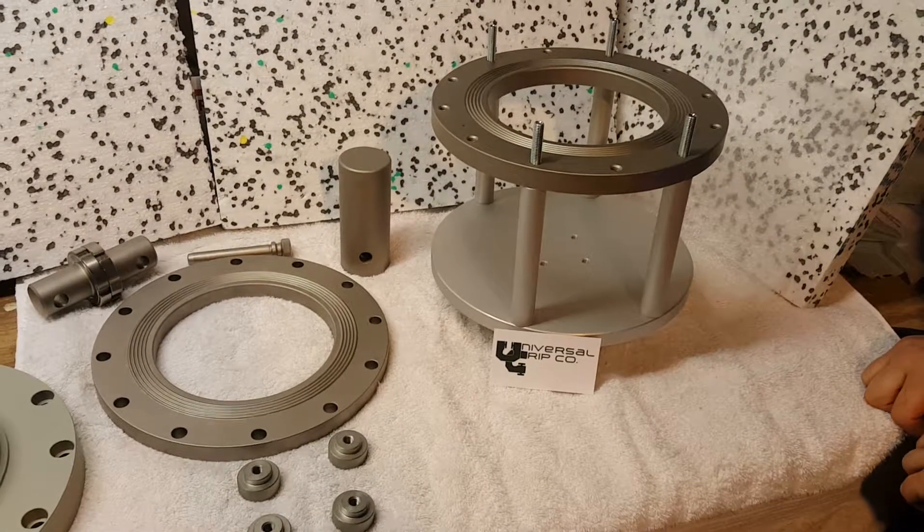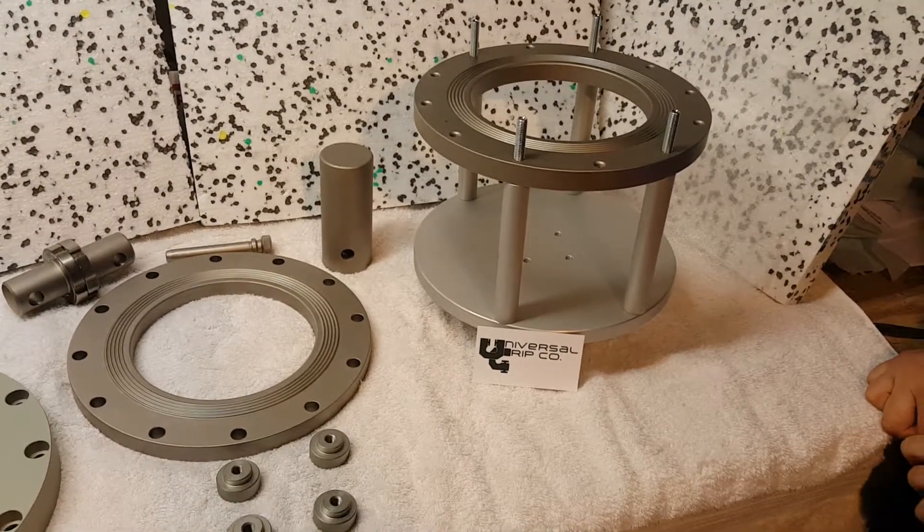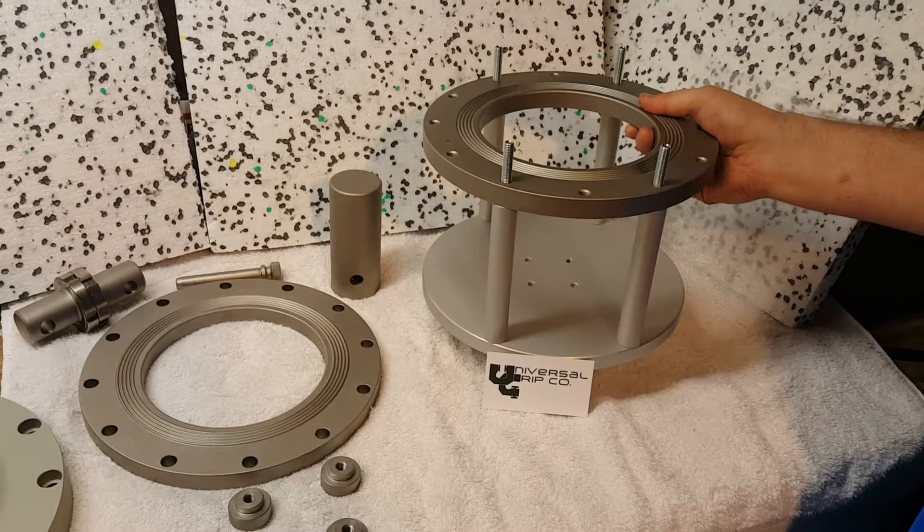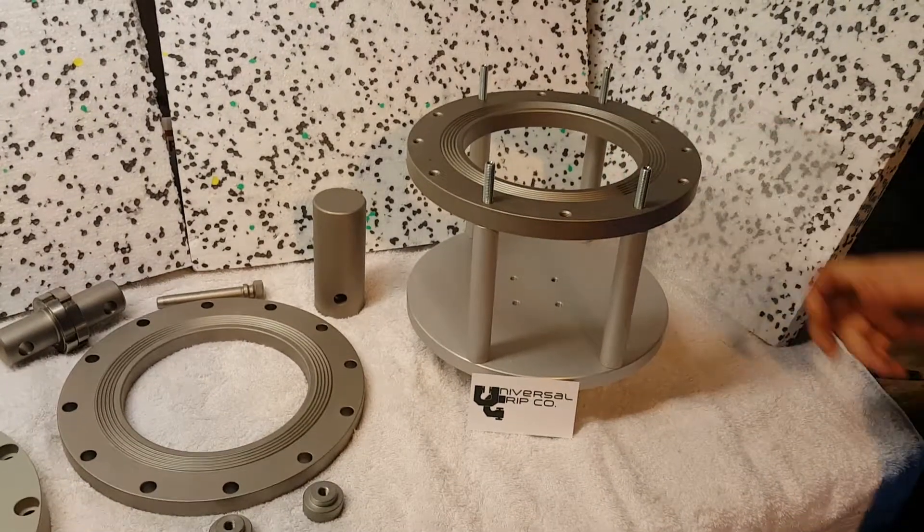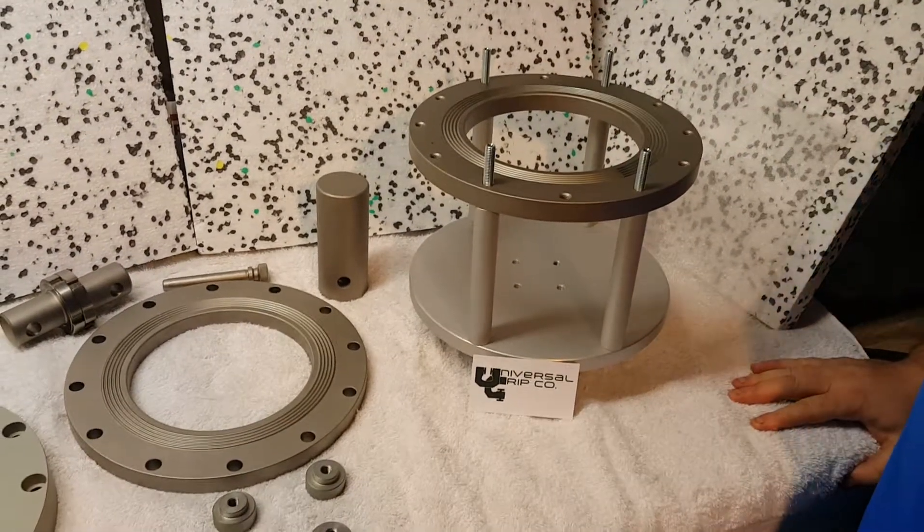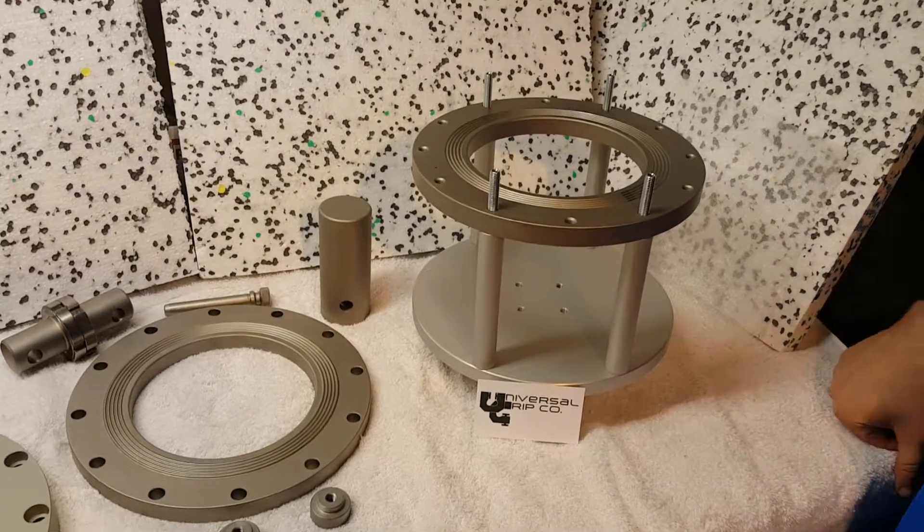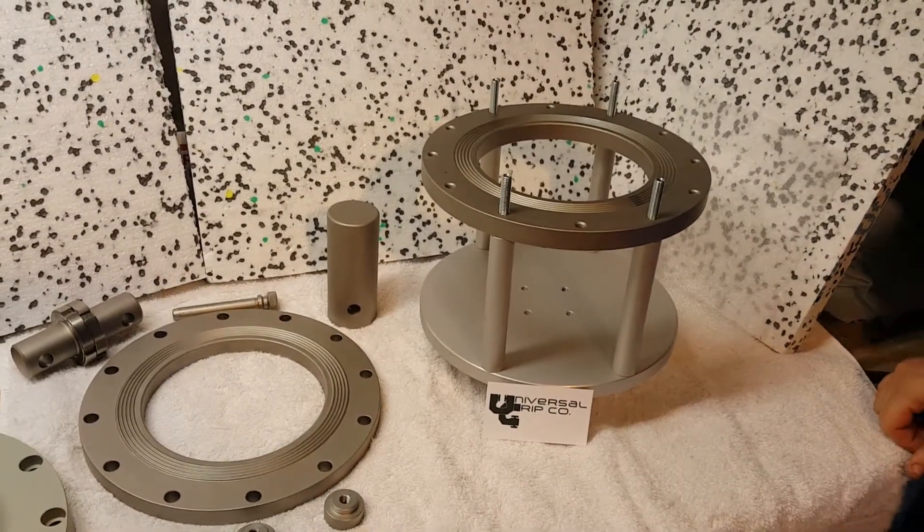Hello everyone. Today we're showing our ASTM D6241 puncture fixture. This is used to test geotextiles. It's also sometimes called the CBR puncture fixture, the California bearing ratio.